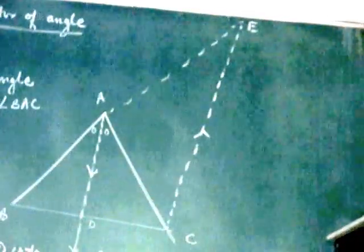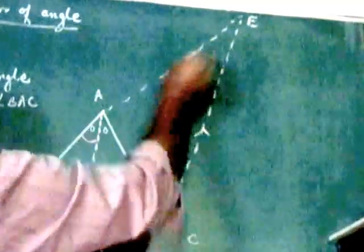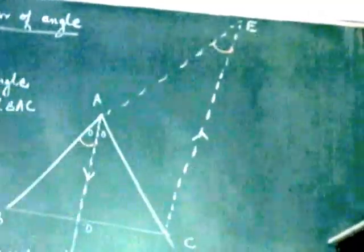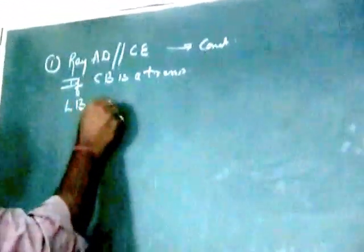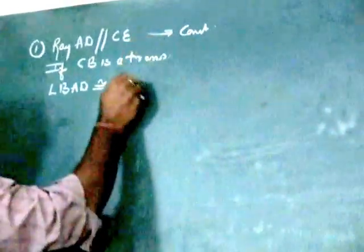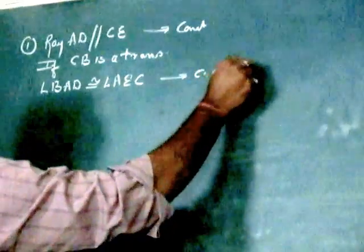CE is parallel to AD. If BE is a transversal, we will get angle BAD is congruent to angle ACE. Angle BAD will be congruent to angle AEC by converse of corresponding angle test.